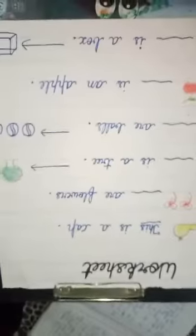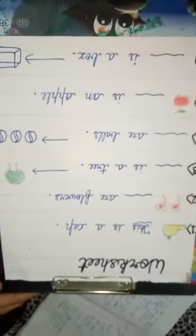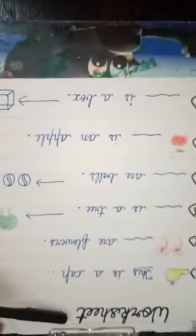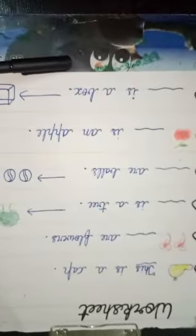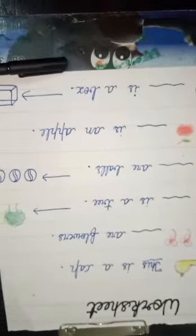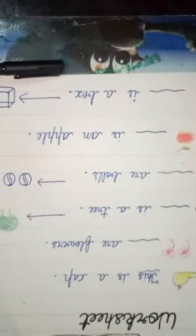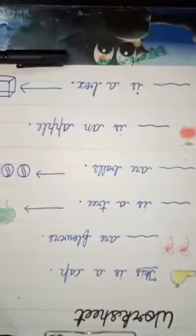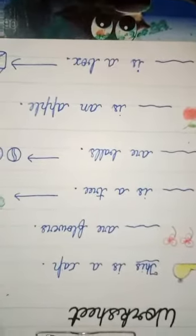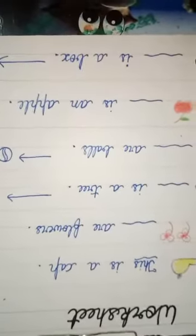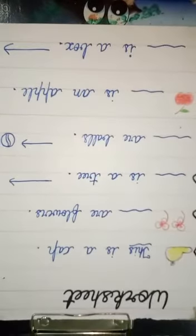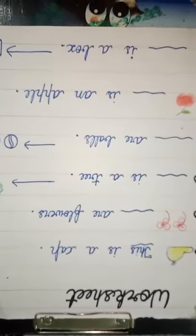Students, I hope you understood the topic very well. Try to make more sentences like this at your home. Ghar mein rahen, surakshit rahen, follow the instructions of the government, wash your hands time to time, eat healthy food. Hope we will have a regular school very soon. Till then, stay home, stay safe.